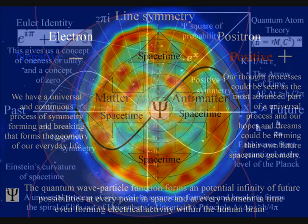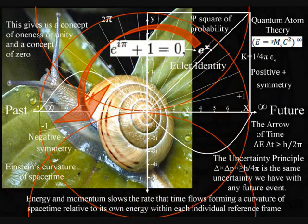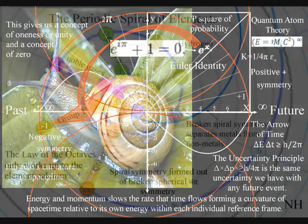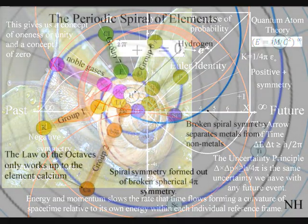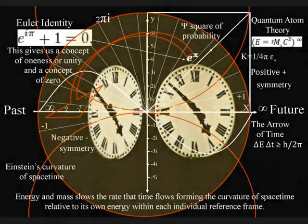This process is totally universal and interactive, from the largest object to the smallest creature, right down to the smallest element of the periodic table, will slow the rate that time flows, forming a curvature of space-time relative to its own energy or mass.